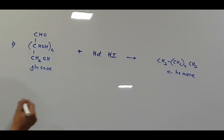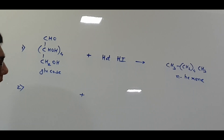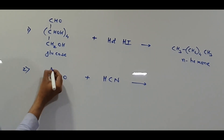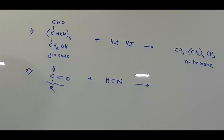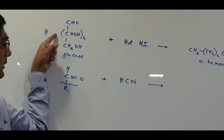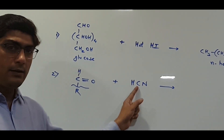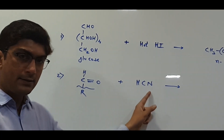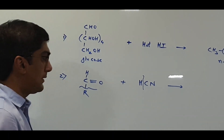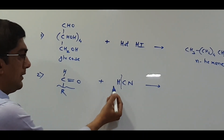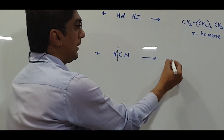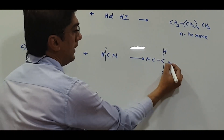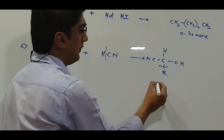The second reaction is with HCN. If we consider C=O with a single bond H and an R group — treating it as any aldehyde instead of considering all the remaining groups — the reaction is the same as we studied in the aldehydes and ketones chapter. Since there is a double bond, we can add the reagent. We break the reagent into two parts: the negative part is added to the positive carbon and the positive part to the negative oxygen. This gives us a product where carbon gets CN and oxygen gets OH, forming a cyanohydrin — called glucocyanohydrin.